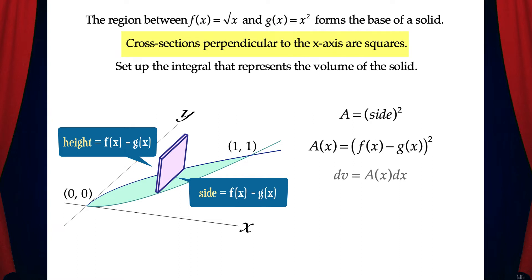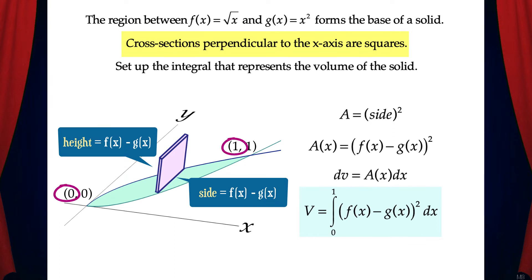We can now write dV, the volume of one cross-section, as A(x) dx. And the integral that represents the volume of the solid is the integral from 0 to 1 of (f(x) − g(x))² dx. Note that 0 and 1 are x-values — the region starts at x = 0 and ends at x = 1, where the curves intersect.